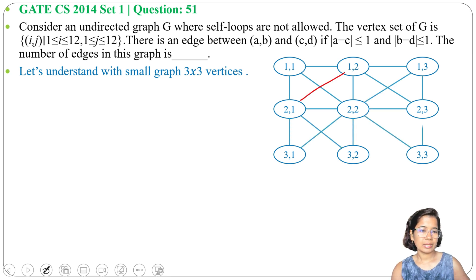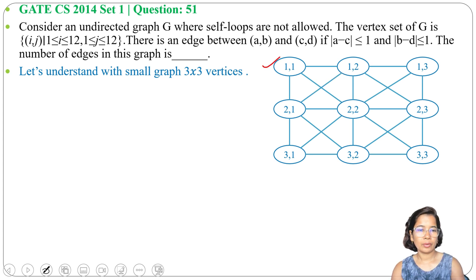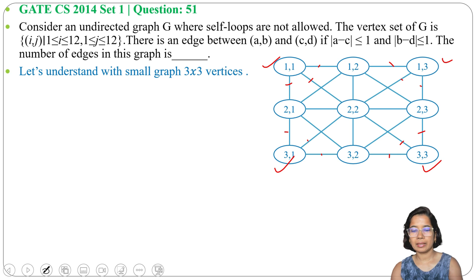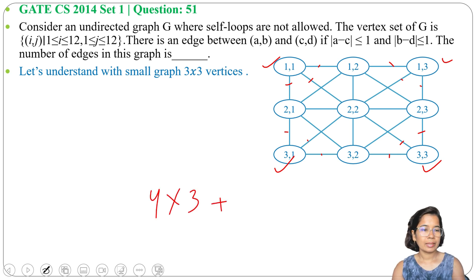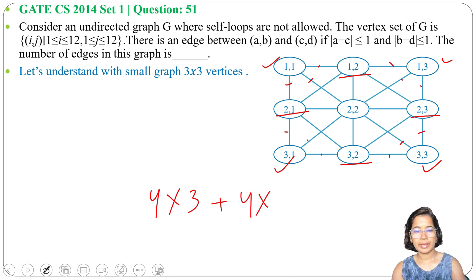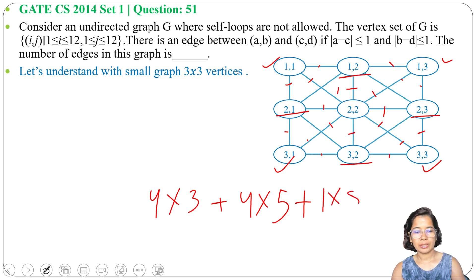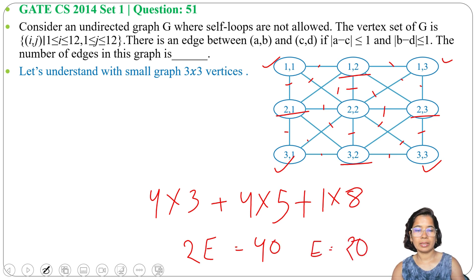After drawing all edges for the 3×3 graph, we count them using the degree sum formula. The 4 corner vertices — (1,1), (1,3), (3,1), (3,3) — each have degree 3, giving 4 × 3 = 12. The 4 middle edge vertices — (1,2), (2,1), (2,3), (3,2) — each have degree 5, giving 4 × 5 = 20. The center vertex (2,2) has degree 8, giving 1 × 8 = 8. Total degree sum = 40, so number of edges = 40 / 2 = 20.